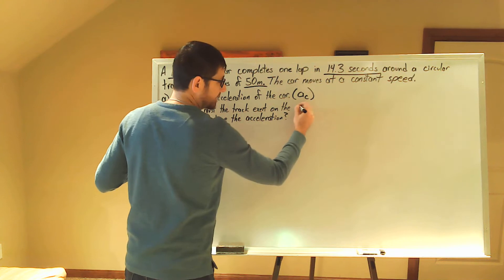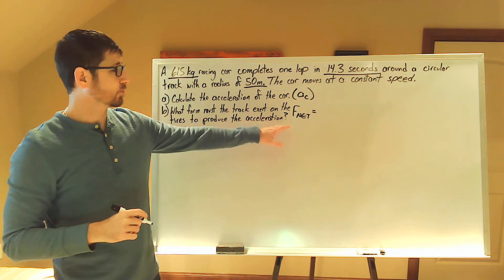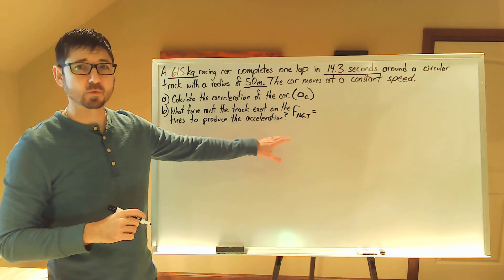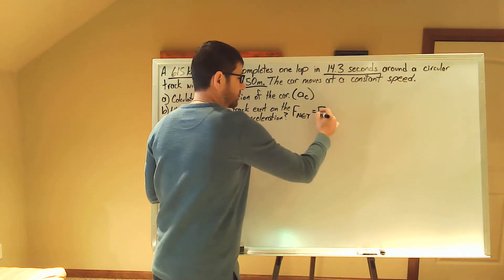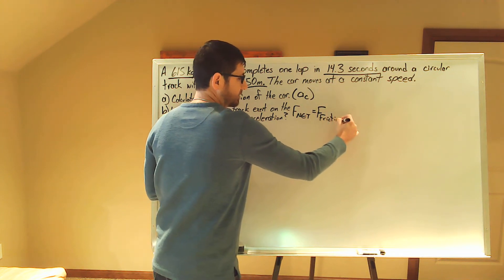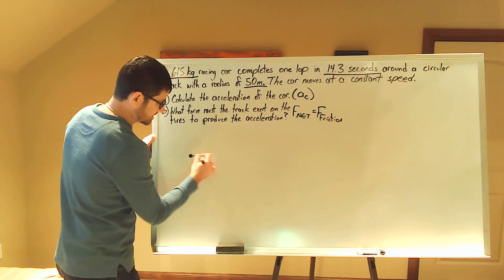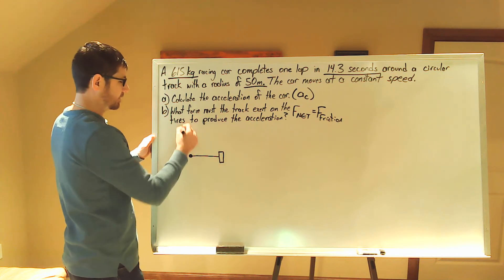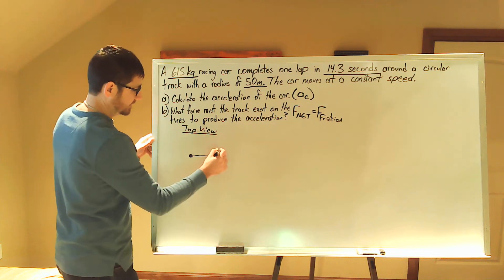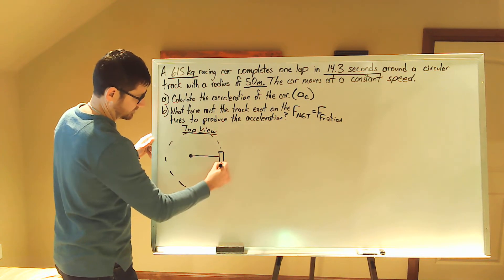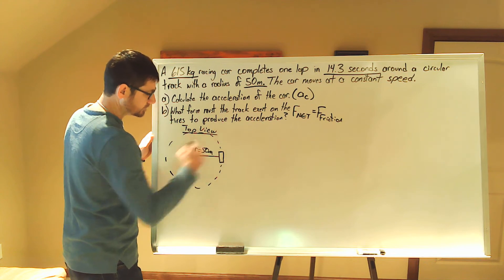Here we have F net. We're going to calculate the net force applied to the vehicle. This force is going to cause the car to turn inward or towards the center of the circle, and the agent of this force is the friction force, force sub friction. Now if we drew a simple picture here — let's say this is the center of the circle, this is my car — this is a top view. Our circle is there, we're on a circular track, our radius is 50 meters.